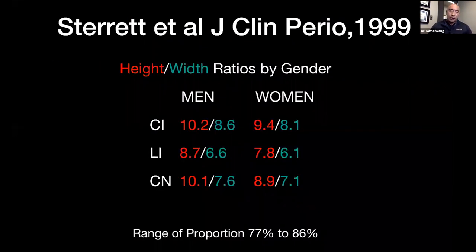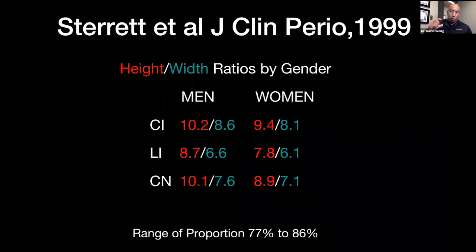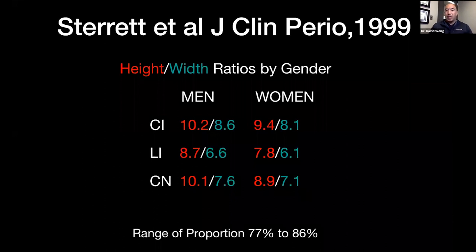Sterrett and company also published a very popular paper on this, finding the width-length ratio to be 77 to 86%. Here's a small table detailing the average height and width of the central incisor, lateral incisor, and canine for men versus women. As you can see, men typically have larger teeth both in length and width.